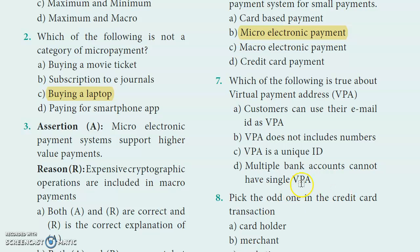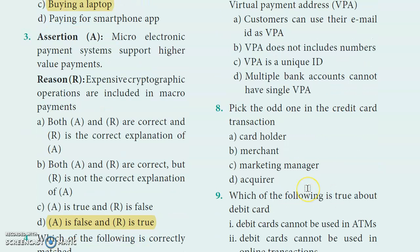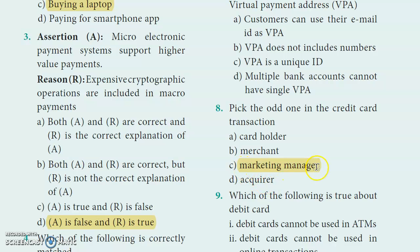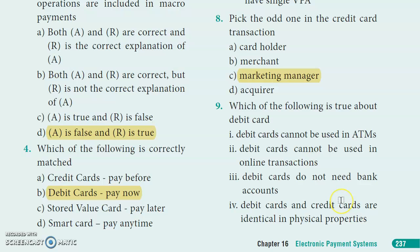Seventh question: In a credit card transaction, the parties involved are the cardholder, the merchant, and the acquiring bank or marketing manager. The marketing manager or acquirer is the correct answer for that position.